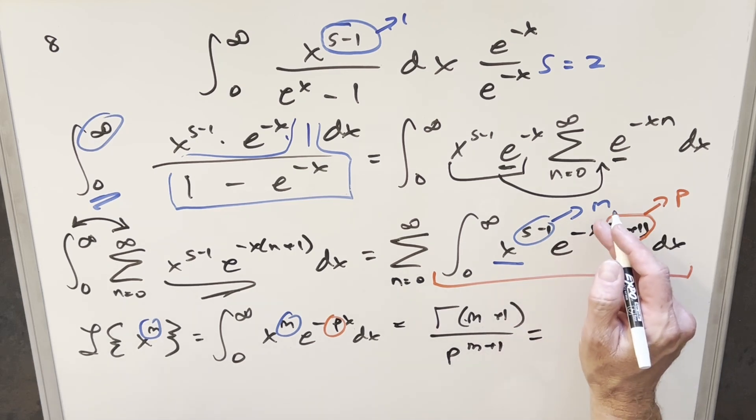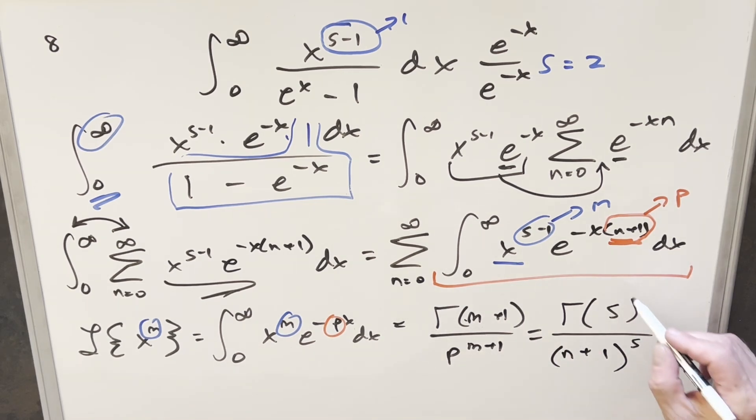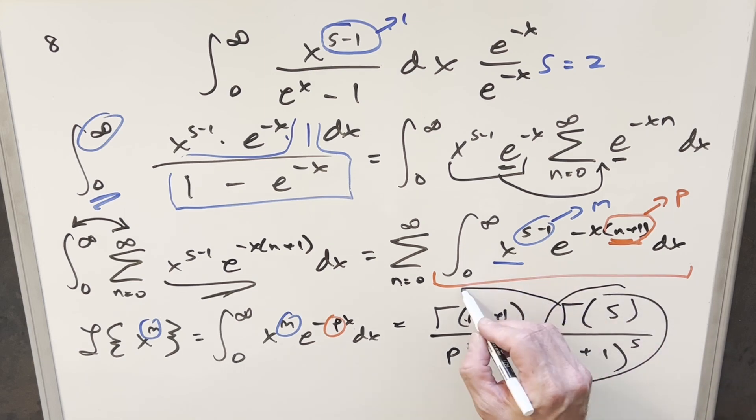So doing that, we'll just use this where m is equal to s minus 1. So this is going to become gamma of s minus 1 plus 1. That's just going to become gamma of s. And then here with p value being n plus 1. Again, n plus 1 is just s. This is going to be n plus 1 to the s. And so we can just take this, put this back in the sum, and then finish it off.